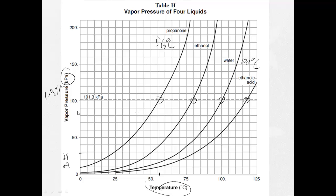You could also be asked: if ethanol has a vapor pressure of 80 kilopascals, what's the temperature? We go over to 80—50, 60, 70, 80—go over to ethanol, intersects the line right about here, which is about 73 degrees Celsius.